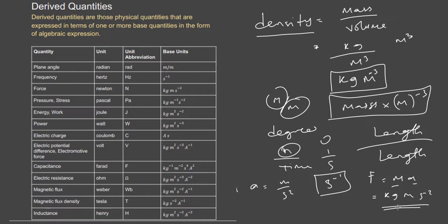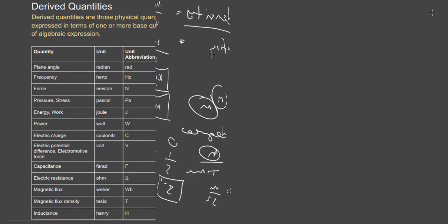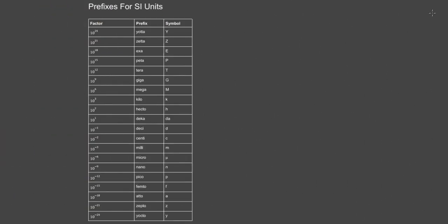Now let's talk about prefixes. We sometimes use prefixes to shorten the value of a physical quantity — especially when you have a very large number. For example, imagine a measurement of 5,000 watts, or another of 24 million watts.